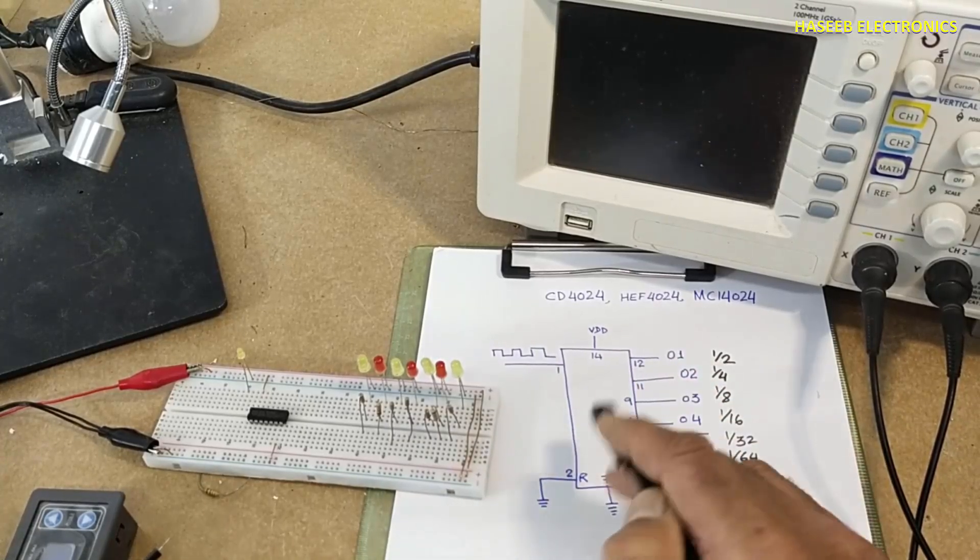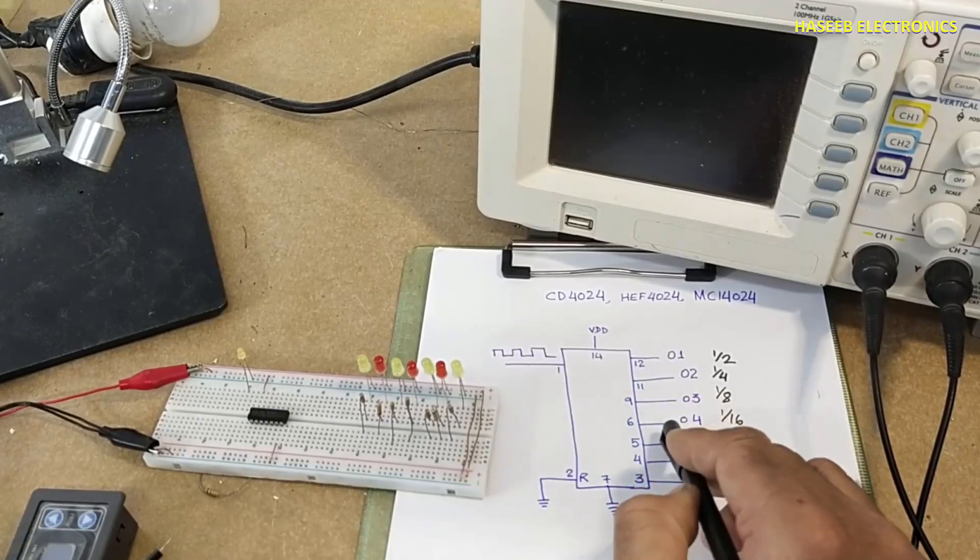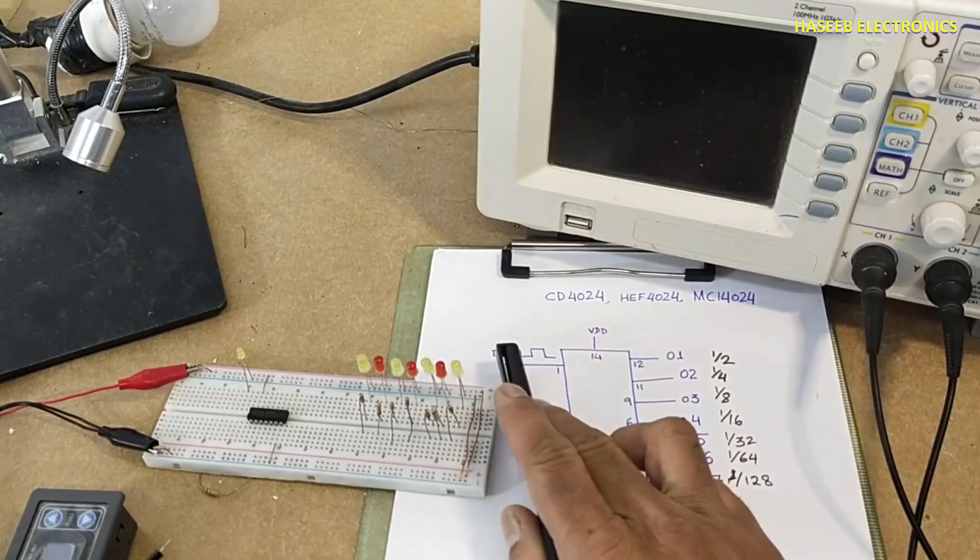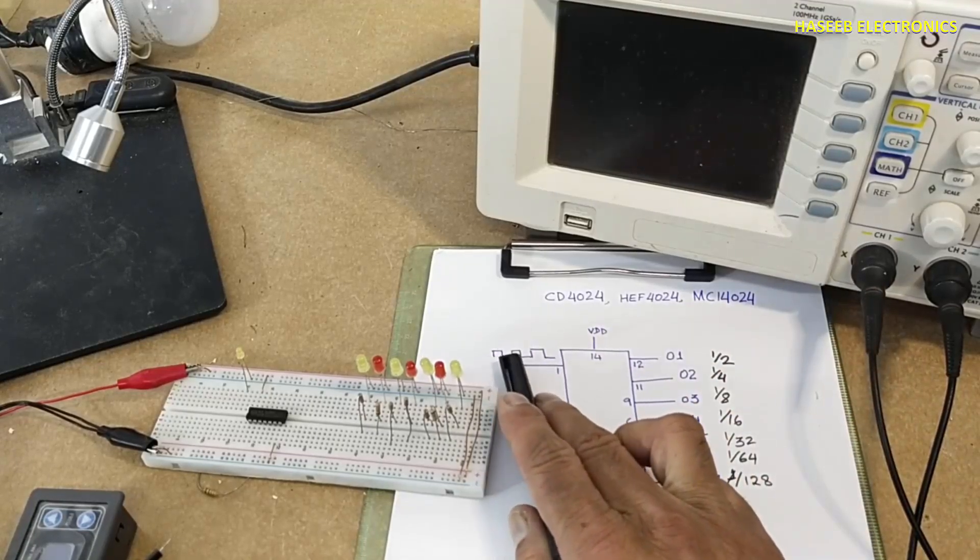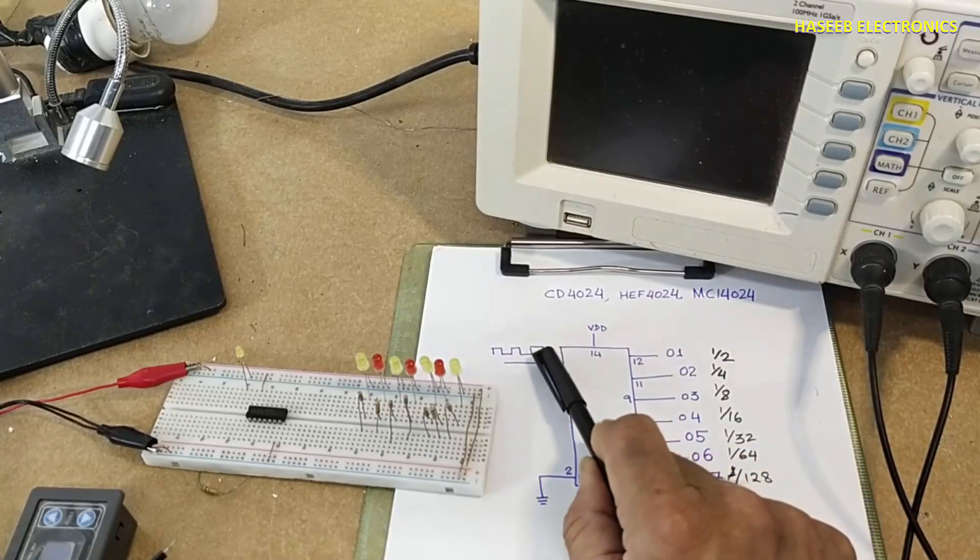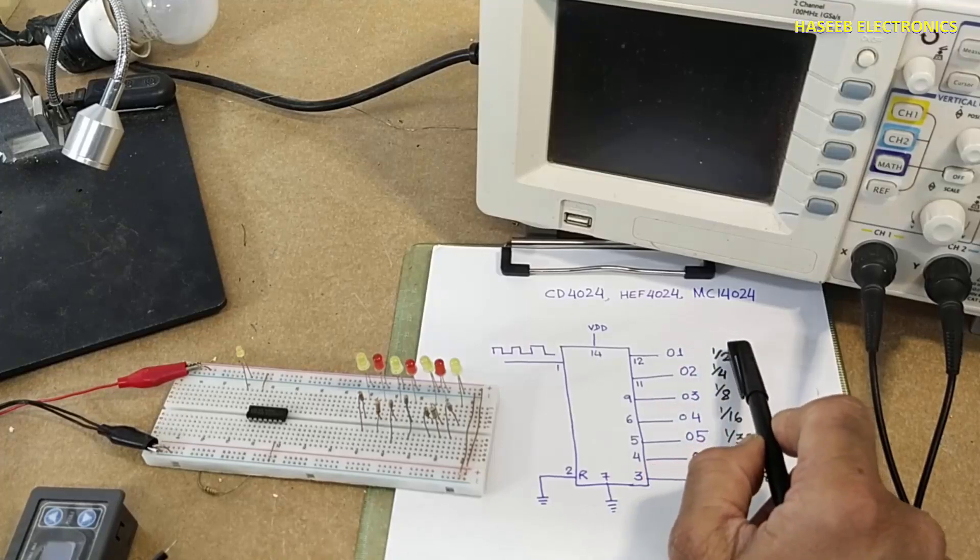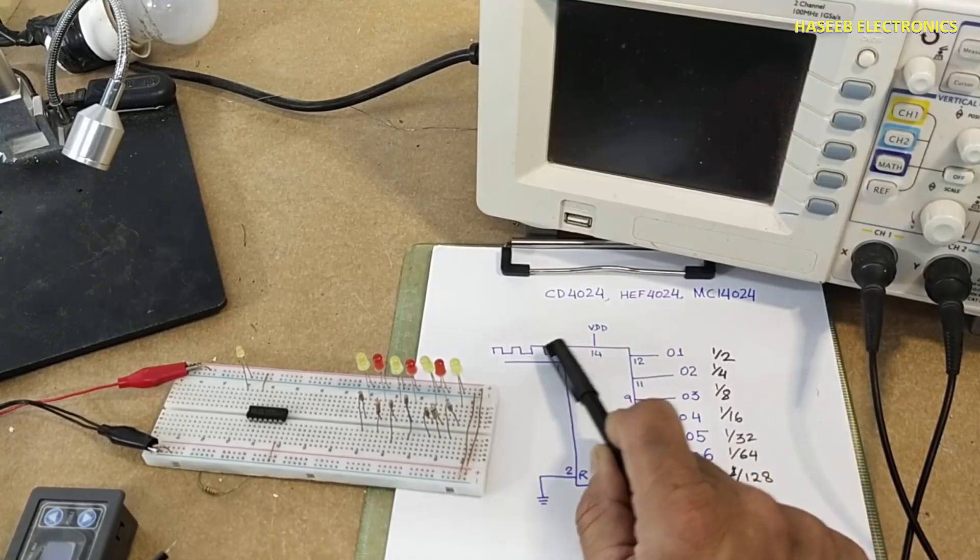Anytime when this signal is high, all counters will become 00. It will count these pulses. At this point, the frequency will be divided by 2 at first output because it needs 2 pulses to count 1.